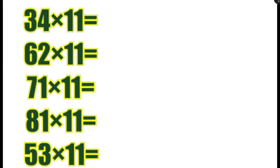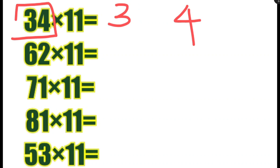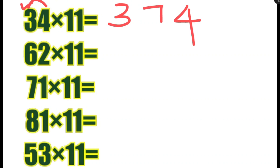Next, we will do three examples. I am going to write this one. 3 and 4 is the same thing. I will write this one. You can write this one. 3 plus 4 is 7. 374 is the answer. Correct.